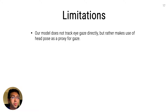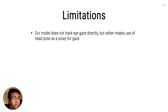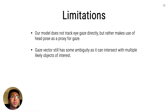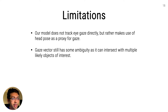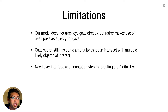While the results of our system look promising, there are several technical limitations that need to be addressed. First, our model does not track eye gaze directly but rather makes use of head pose as a proxy for gaze. Furthermore, estimating points of gaze from the gaze vector still has some ambiguity — a single gaze vector can intersect with multiple planes or objects, thus having multiple candidate focal points. In such cases, a cone of gaze rather than a point of gaze may make more semantic sense. Lastly, digital twinning needs a curation of objects of interest by placing fiducial markers on them. In the future, with advances in computer vision-based approaches, we hope to automate this step as well.